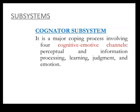Next are the subsystems or processes. The cognitive subsystem is a major coping process involving four cognitive-emotive channels: perceptual and information processing, learning, judgment, and emotion. For example, the pregnant mother adapts positively after understanding that nausea and vomiting are normal minor ailments of pregnancy — using reasoning, information processing, learning, judgment, and emotion.